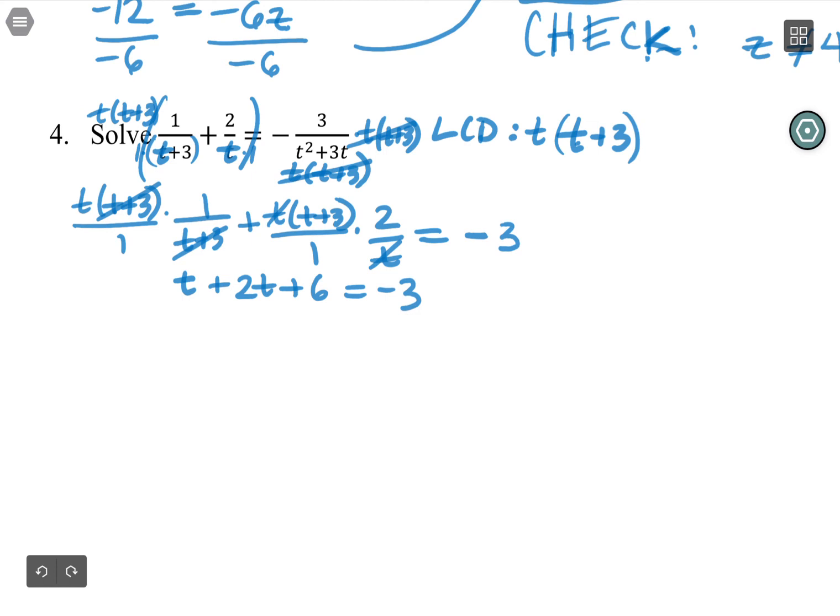So I can combine like terms, I get three t plus six equals negative three. I'm down to a single t on one side. So t is being multiplied by three, and then I'm adding six, which means to solve, I'll first subtract six to get rid of it, which gives me three t equals negative nine. And then I'll divide by three. And I get t equals negative three.